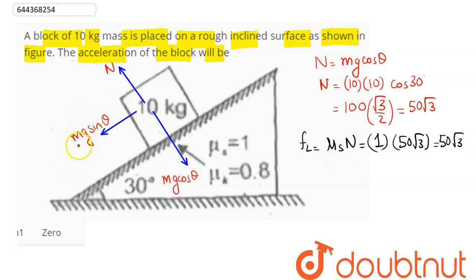Now if we find the value of mg sine theta. Mass as 10, g is 10 and sine of 30 degrees. So this comes as 100 by 2 equal to 50 Newton.